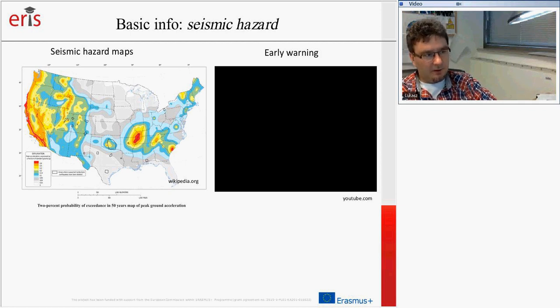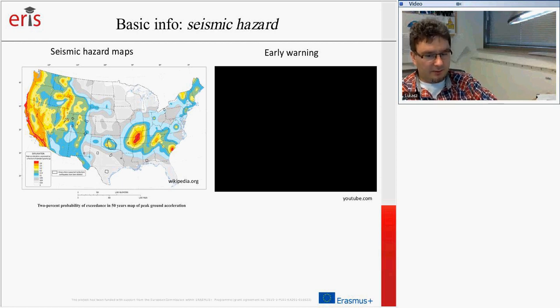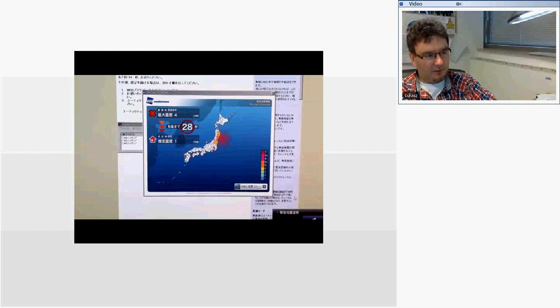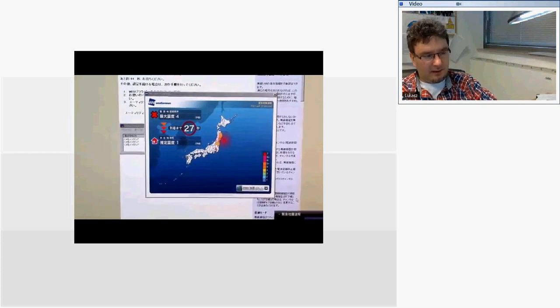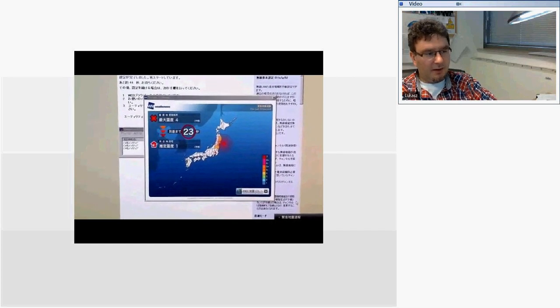Another very interesting feature of seismology is an early warning system. An early warning system uses seismic waves recorded on different seismic stations to obtain information that something has happened, and predicts that in a very short time — around 10 to 30 seconds — ground shaking will occur at a given location. There is a movie available online showing an example of such an early warning in Japan during the very big earthquake of 2011.